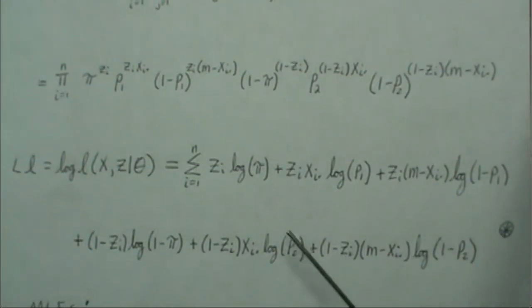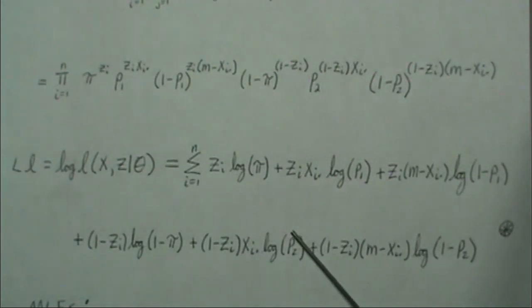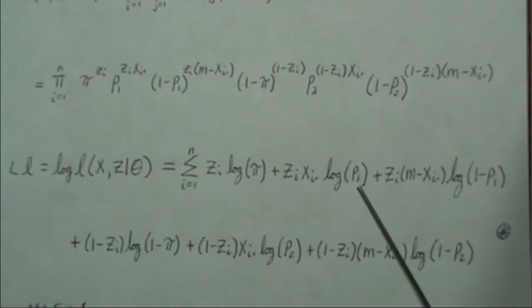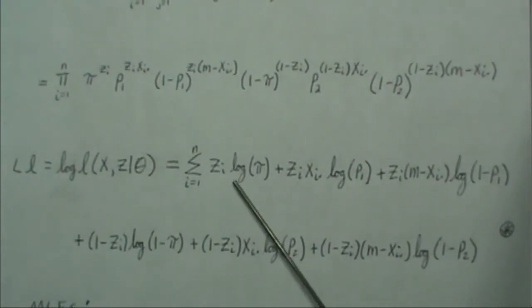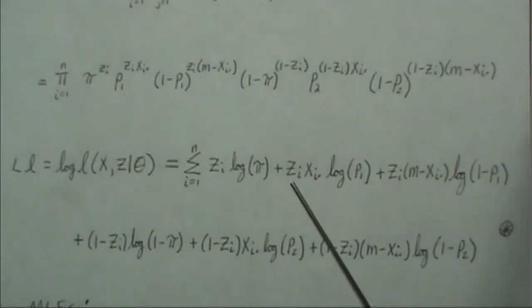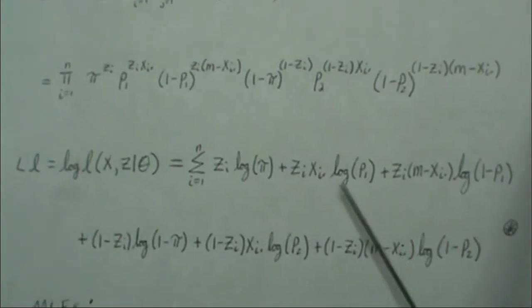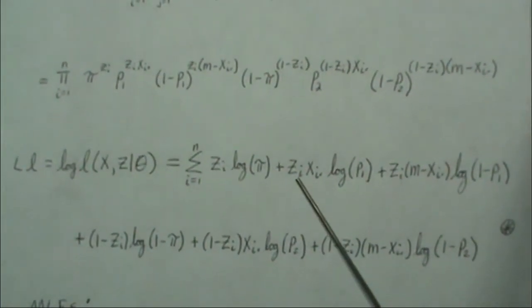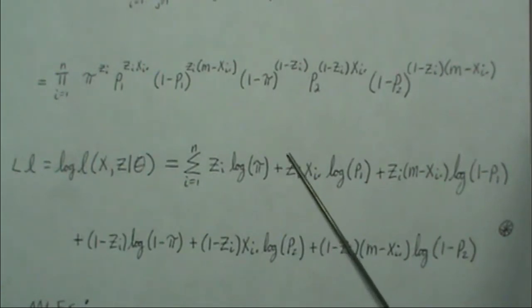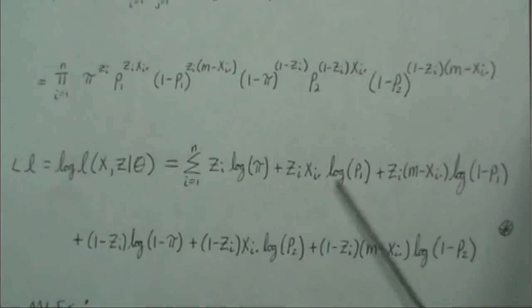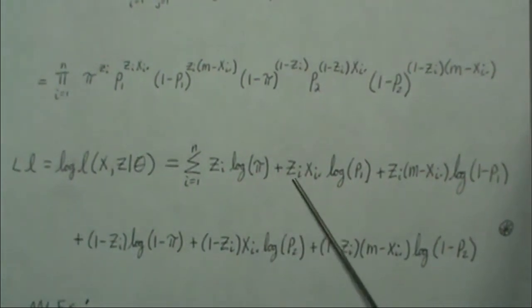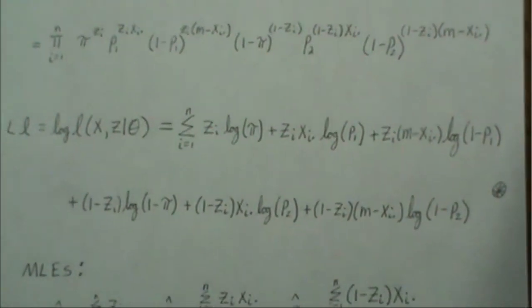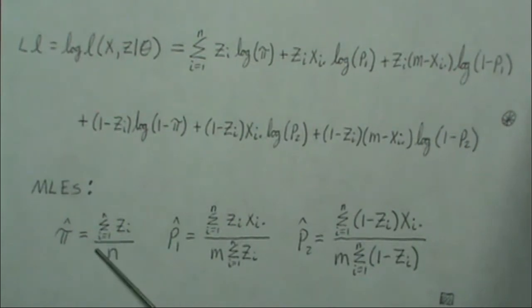To maximize this we maximize over P1, P2, and pi, treating the Z_i as constants. The parameters P1, P2, and pi are going to be functions of the Z_i and Z_i-dot values. We could replace Z_i with some other constant — call it Z_i^T — and when we maximize it's the same thing, just with Z_i replaced by Z_i^T. That will make more sense in a minute.